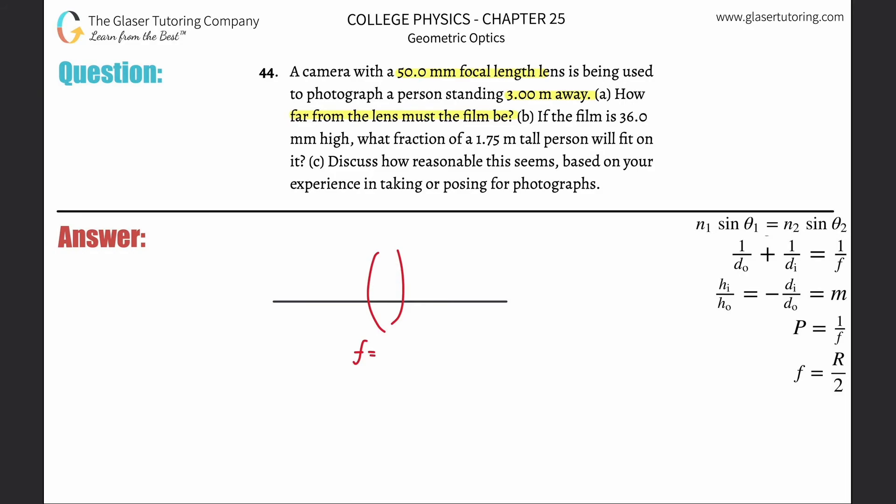It told us it's 50 millimeters, but let's convert that to meters, so 0.05 meters. There's also a person that is standing three meters away. Let's assume that we always usually put the object, which is the person, usually to the left of the lens.